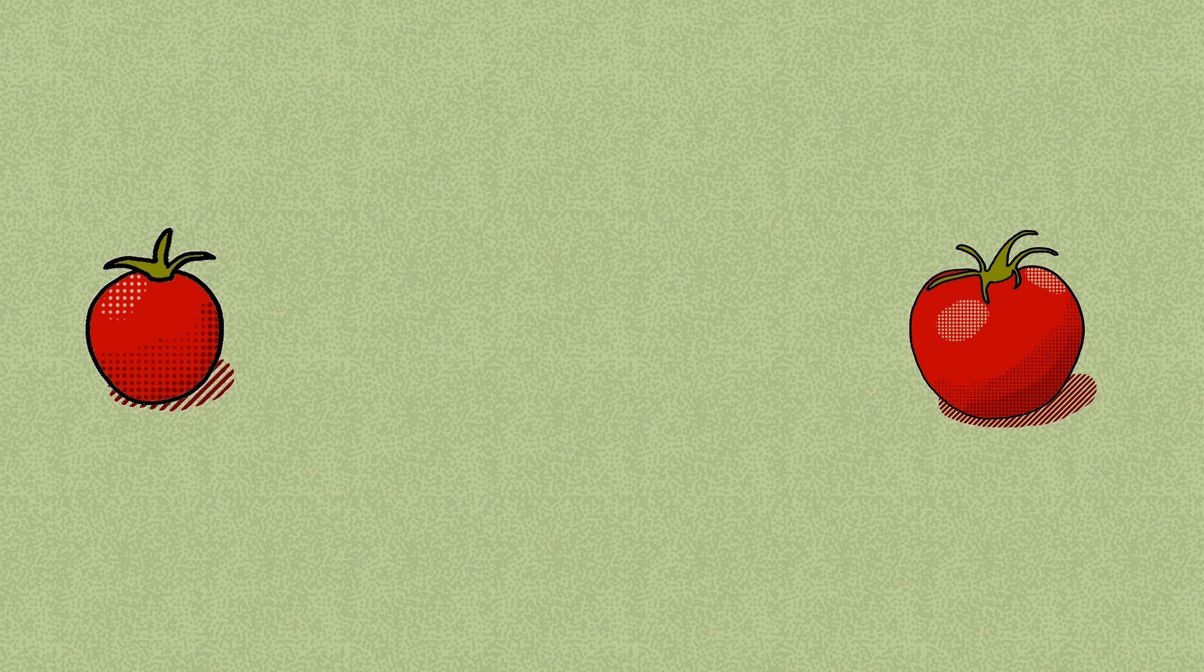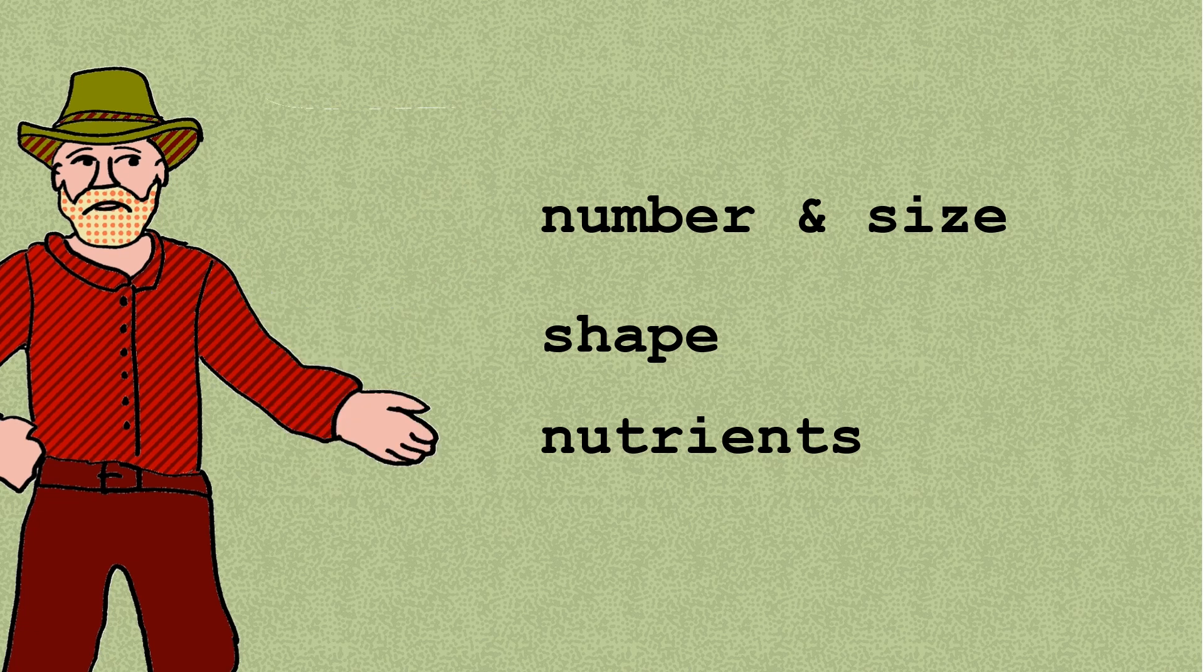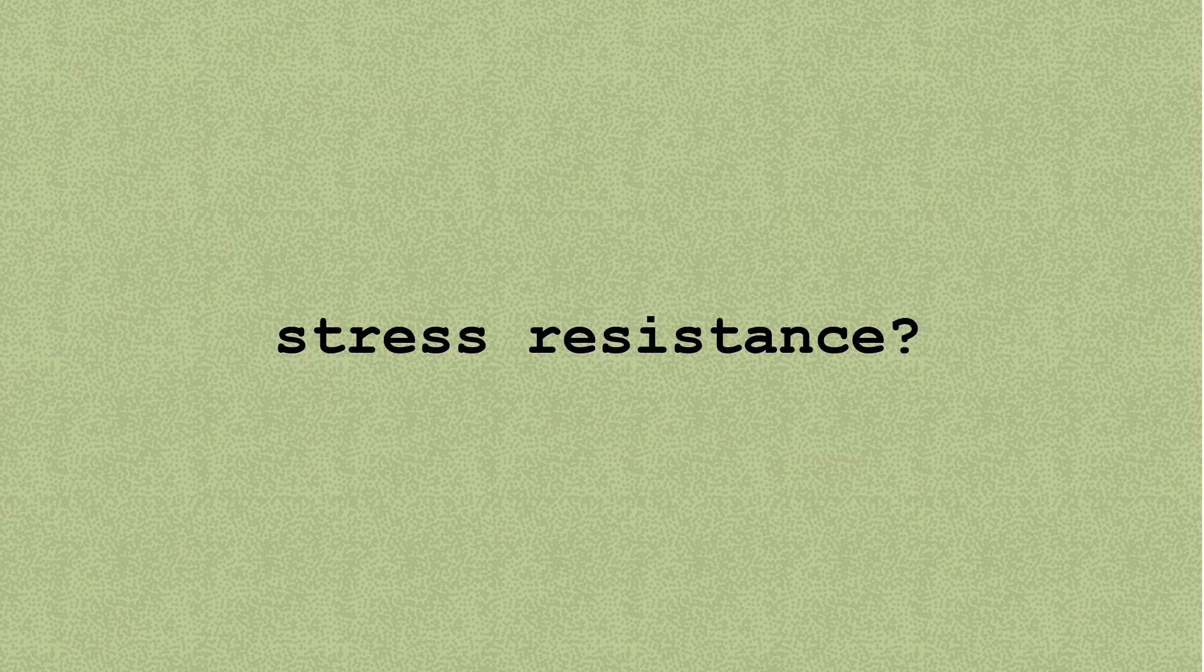These methods have allowed us to find genes for fruit size, number, shape, nutrient composition, and more in tomatoes and other crops. But it's a lot harder to find a gene for stress resistance. We run into the same old problem with traits we can't easily see or measure.